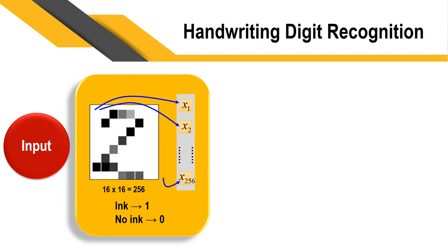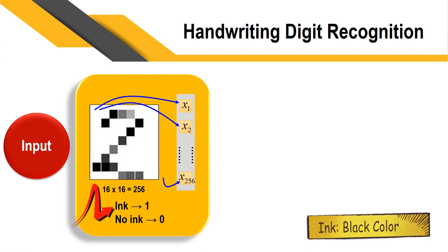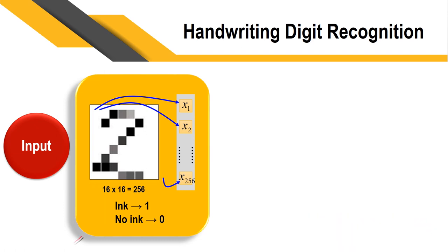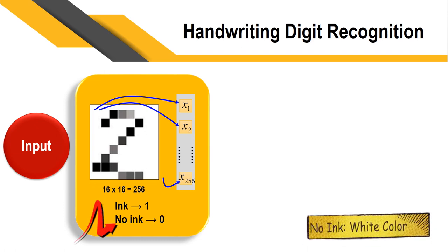First of all, the digit two will be digitized into a number of pixels. Here I have taken 16 rows and 16 columns, so 16 by 16 equals 256 pixels. If there is ink — that is black color — the input will be one, and if there is no ink — white color — the input will be zero.